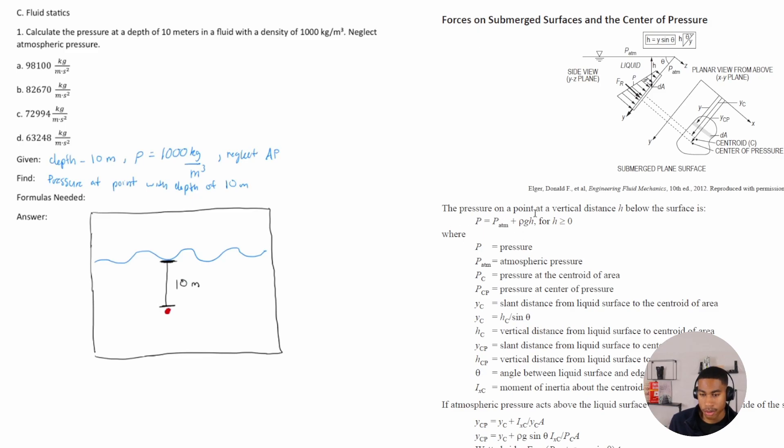the pressure on a point at a vertical distance H, which is what we have below the surface is P is equal to, what does P stand for? P is pressure, P atmospheric, or P ATM is atmospheric pressure, which we're neglecting.